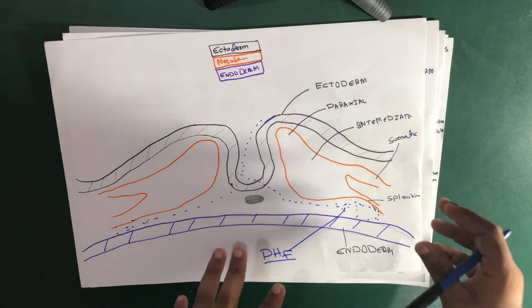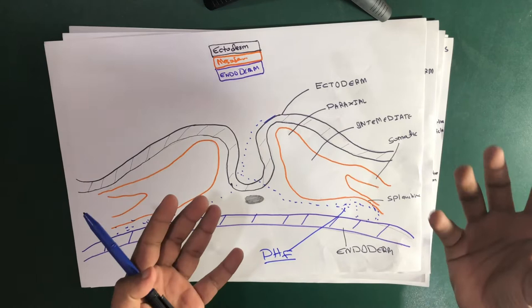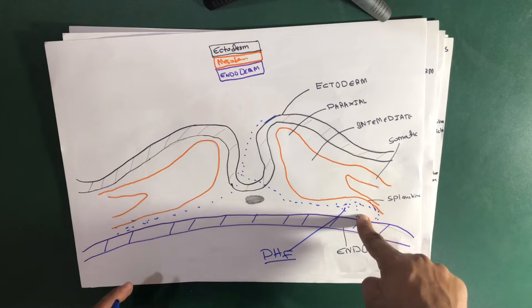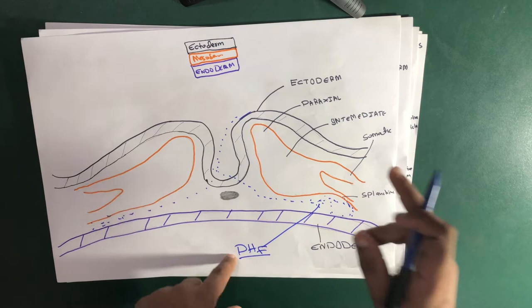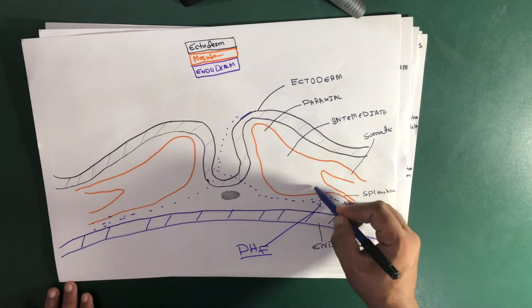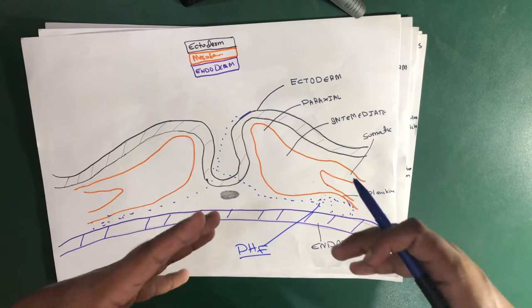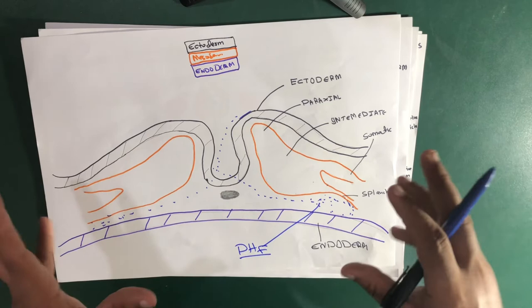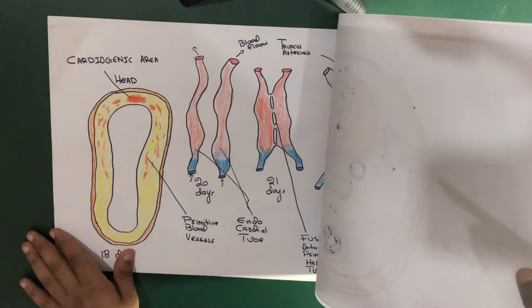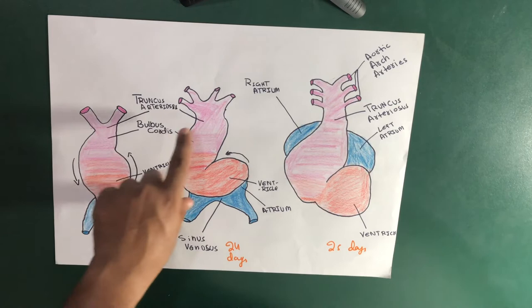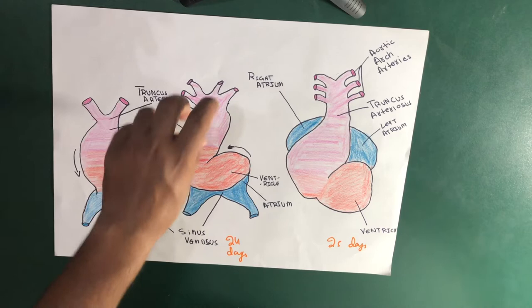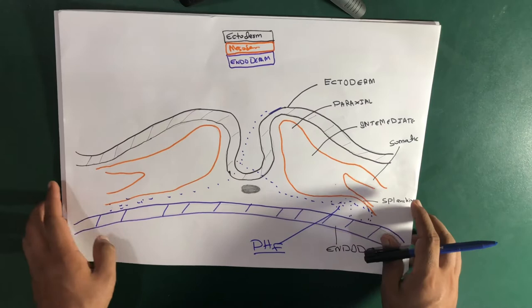From the primary heart field, both the right and left atria arise, as does the left ventricle, and most of the right ventricle. From the secondary heart field, we get the bulbus cordis and the truncus arteriosus. These terms may seem unfamiliar, but the truncus arteriosus is here and the bulbus cordis is here in this diagram — we are coming to this in a bit.